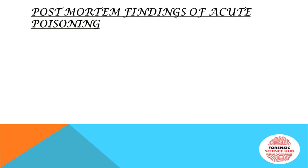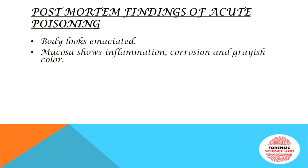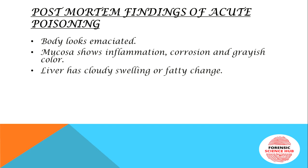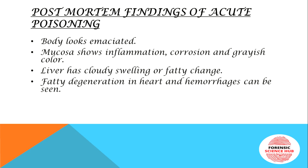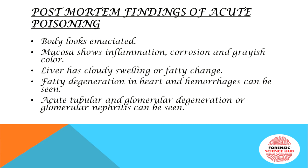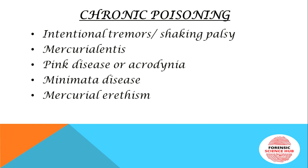Post-mortem findings of acute poisoning include: the body looks emaciated — meaning lean, weak, and thin. In the GI tract, the mucosa shows inflammation, corrosion, and a grayish appearance. The liver shows cloudy swelling or fatty change — this was also seen in arsenic. Fatty degeneration and hemorrhages are seen in the heart. In the kidney, acute tubular and glomerular degeneration occurs, or glomerulonephritis can also be seen.